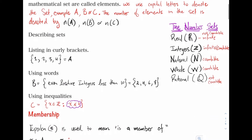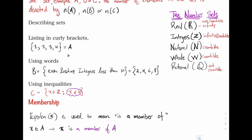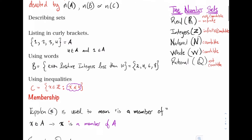Now let's look at membership. We're simply asking whether or not an element is a member of a set. The symbol epsilon (∈) is used to mean 'is a member of'. So whenever we see this symbol, we read 'is a member of'. For example, x ∈ A means 'x is a member of A'. We can also say four is a member of A and one is a member of A, since those elements appear in the set.